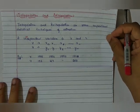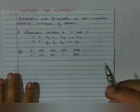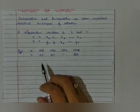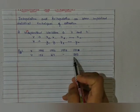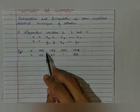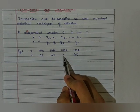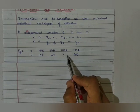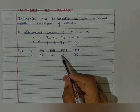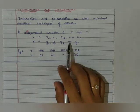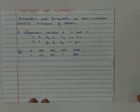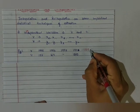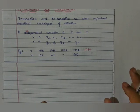So the next topic is what is interpolation and extrapolation. I am just revising here whatever you have already studied. Here x is given as number of years and y is the values. For example, 1995 and 1996 values are given, 1997 value is not given, and 1998 value is given. If you have to calculate the value of 1997, it is called interpolation — finding the value of one variable within the given range.